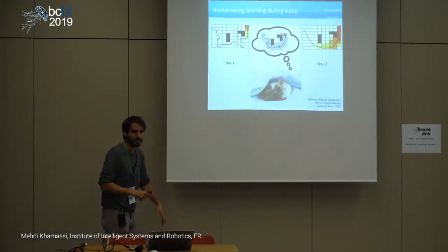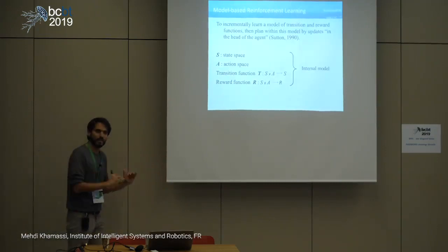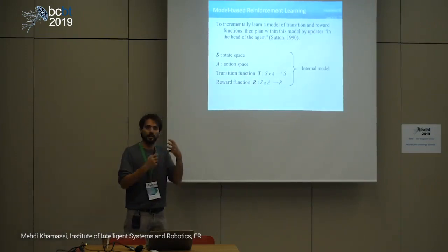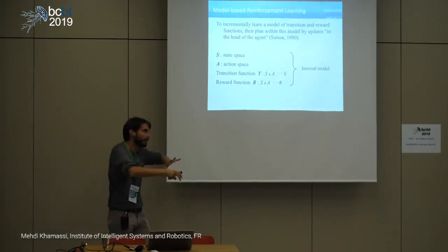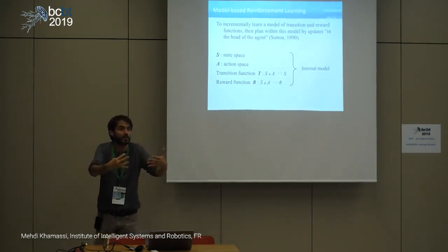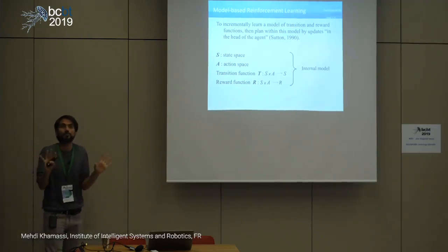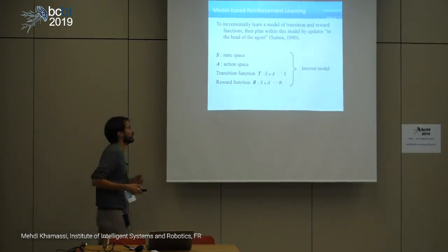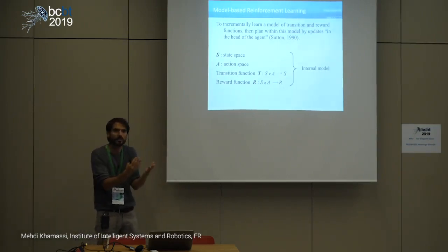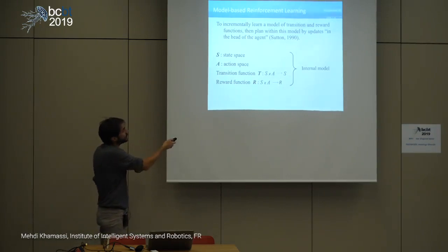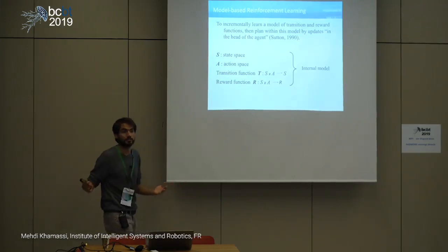In machine learning, architectures exist that implement exactly this idea. Formally, when people say model-based in reinforcement learning, they mean explicitly manipulating the transition function and the reward function. The agent tries to learn these functions — a sort of graph where for each state-action pair there's a probability of ending up in different states. In navigation, this could be like a cognitive map.